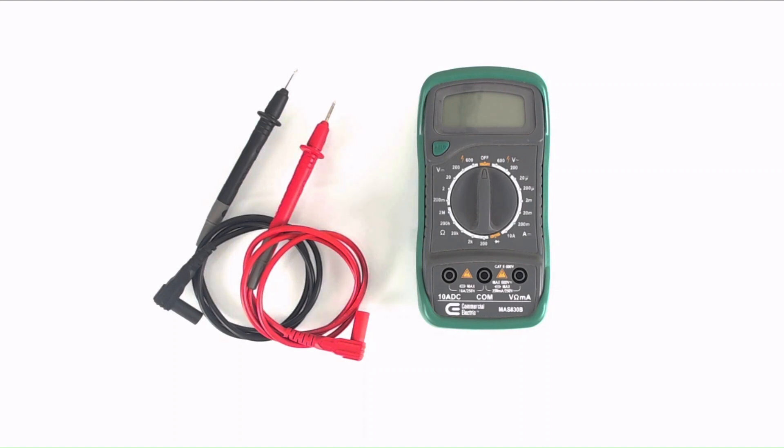It's also important to start at the largest current range and then decrease the range as needed. This multimeter has two input jacks for measuring current. The one on the left can measure up to 10 amps, and the one on the right, also used when measuring voltage and resistance, can measure up to 200 milliamps. Because I know that my system draws less than 200 milliamps, I will use the input jack on the right.